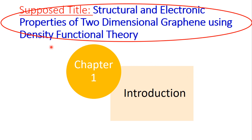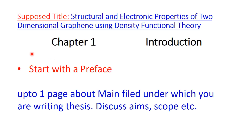Writing chapter one is very critical. One should start with a preface — usually associated with a book, but it can be used for a research proposal as well. It should be around one page and should discuss the main field under which you are writing your thesis or research proposal, and should cover aims, scope, etc.